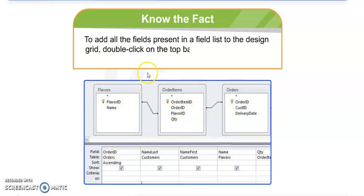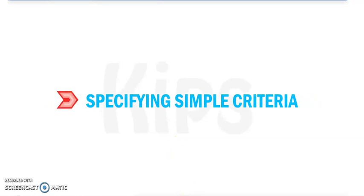Next is the condition on the field. To add all the fields present in a field list to the design grid, double-click on the top bar of the field list and drag it to the design grid. So now we have done three pages. Now next, specifying simple criteria - this topic you will do in the next class.